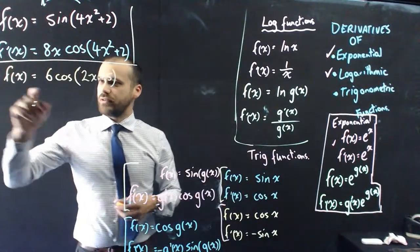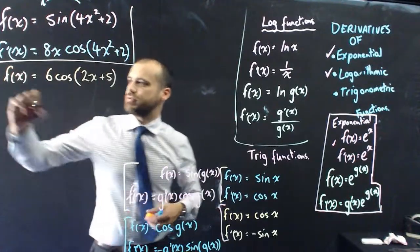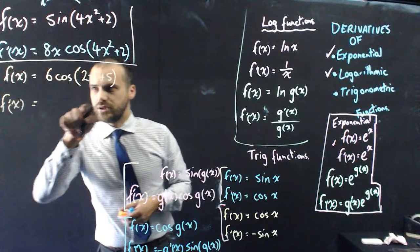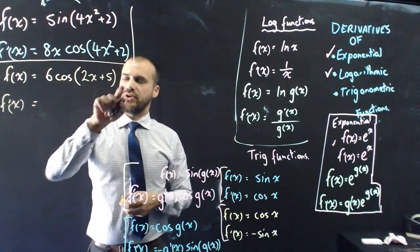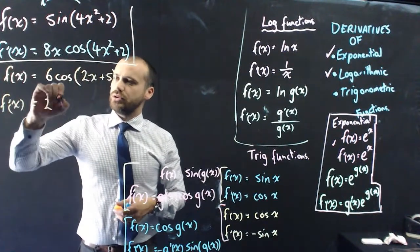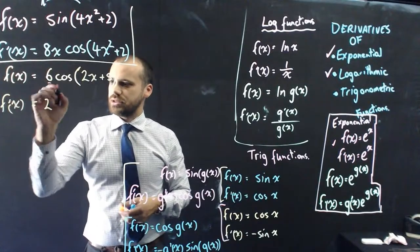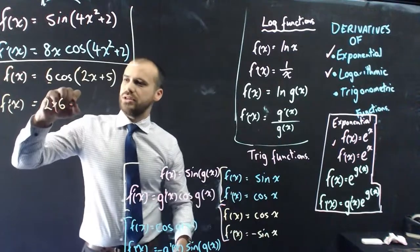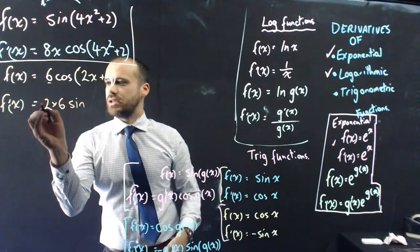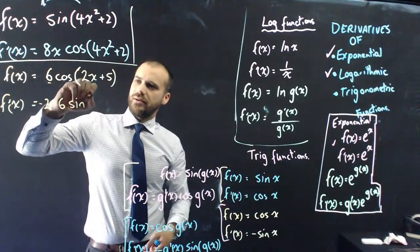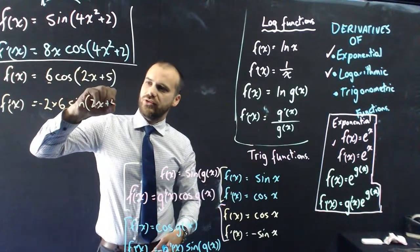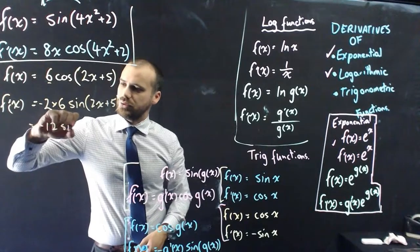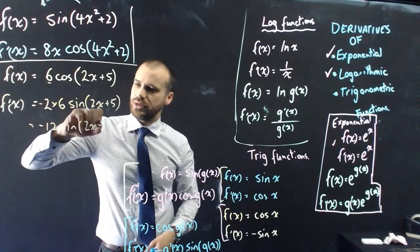If f of x equals 6 cos of 2x plus 5, then f dash of x equals - bring the derivative of 2x plus 5 out the front, which is 2, multiply it by the 6 already there. The cos becomes negative sin, so I put sin there and a negative out the front, then 2x plus 5 stays. Negative 2 times 6 is negative 12, giving negative 12 sin of 2x plus 5.